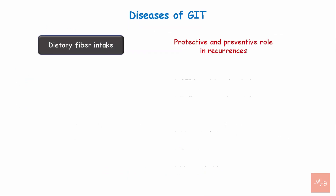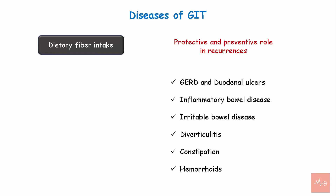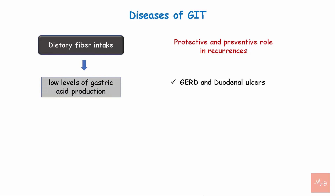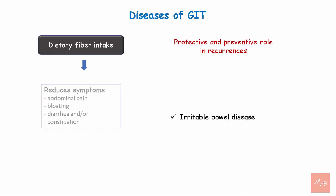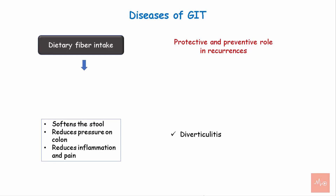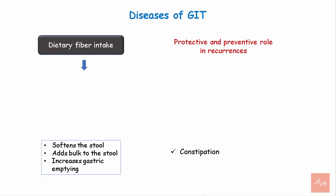Dietary fiber intake has a protective and preventive role in recurrences of various diseases of the gastrointestinal tract. In gastroesophageal reflux disease and duodenal ulcers, dietary fiber is responsible for low levels of gastric acid production. In irritable bowel disease, dietary fiber consumption reduces symptoms like abdominal pain, bloating, diarrhea, and constipation. In diverticulitis, dietary fiber consumption softens the stool, reduces pressure on the colon, and reduces inflammation and pain. In constipation, dietary fiber softens the stool, adds bulk, and increases gastric emptying.